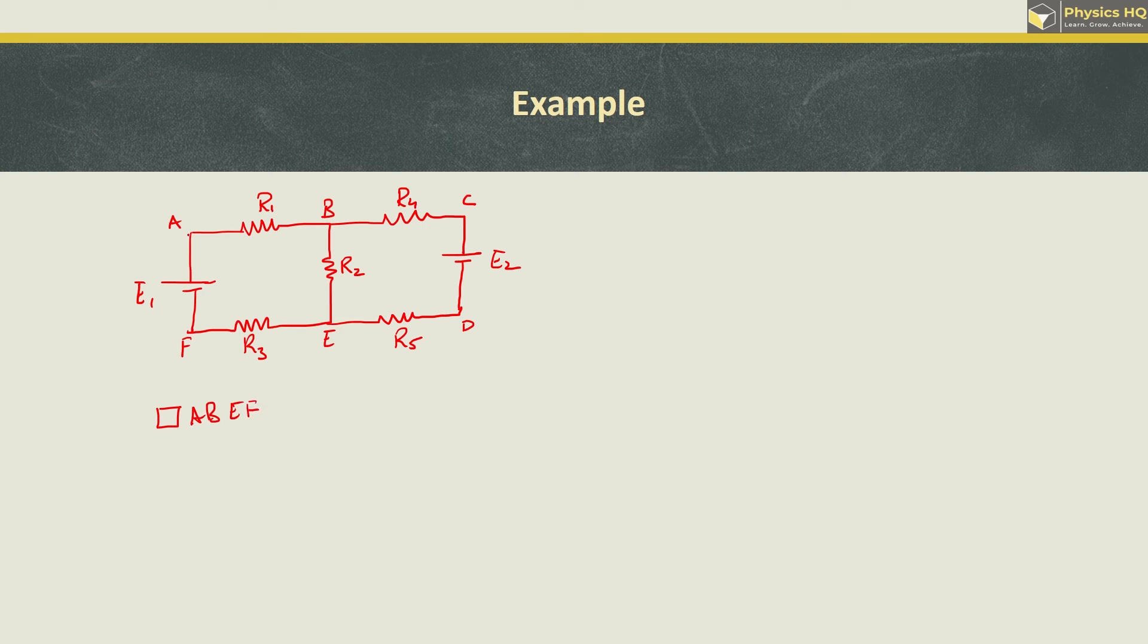Now, before starting, what should we do? First, we need to assign current to each branch. Let us say the first current is I1 and the second current is I2. These two currents combine in this third branch to flow as I1 plus I2. Then here you have I1 and here you have I2. This is the basic work you have to do.